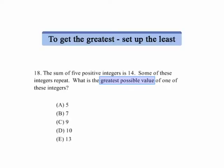Well, to get the greatest, set up and use the least numbers, usually it's going to be a 1. In this case, if we've got five positive numbers and they add up to 14,